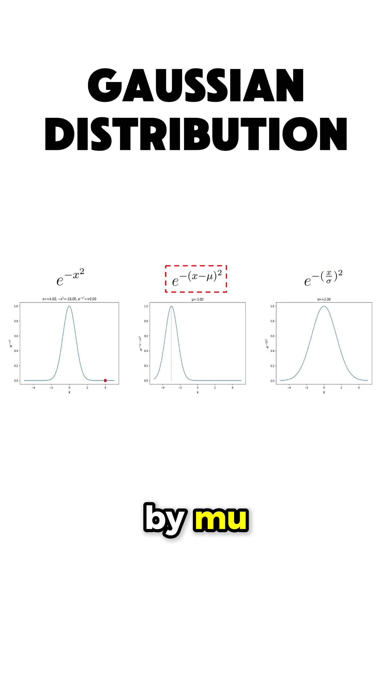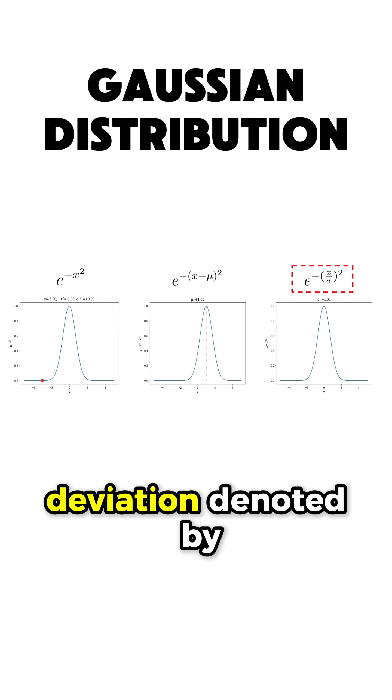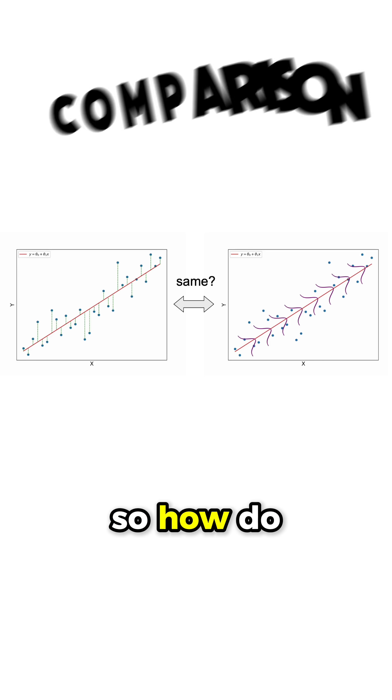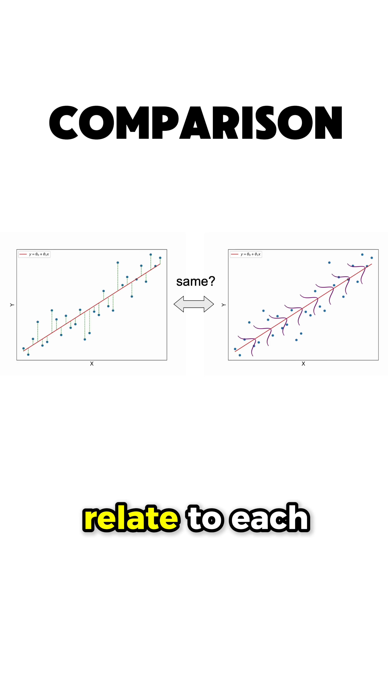The mean, denoted by mu, and the standard deviation denoted by sigma. So how do these two concepts relate to each other?